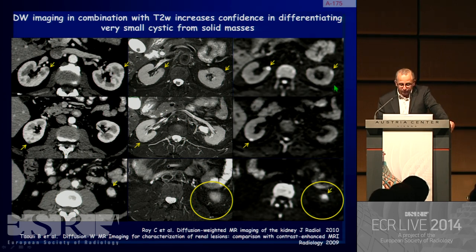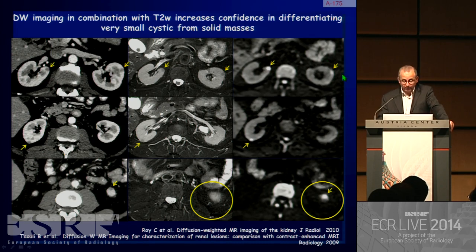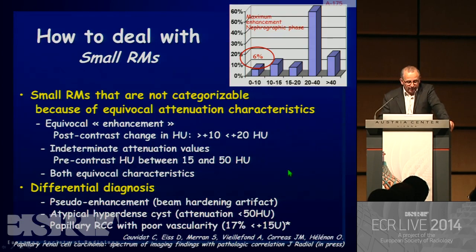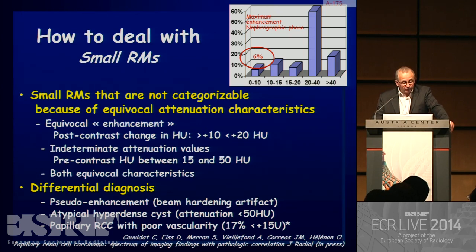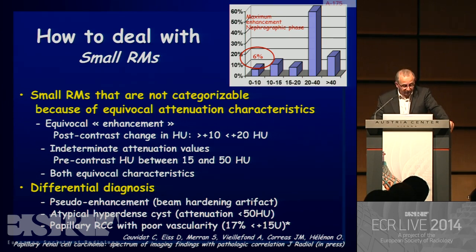It is very interesting to see the role of diffusion-weighted imaging, particularly for papillary cancers. In the case of small renal masses now above 8 mm in diameter, small masses that are not categorizable can be due to equivocal attenuation characteristics.